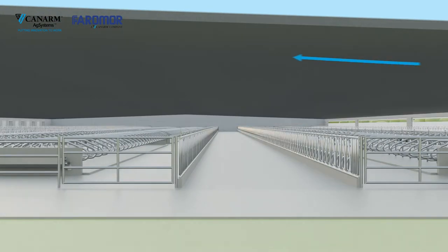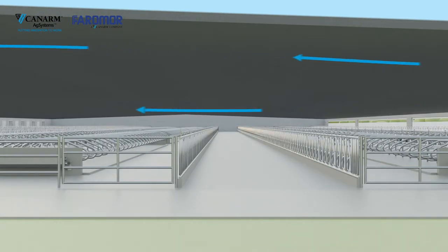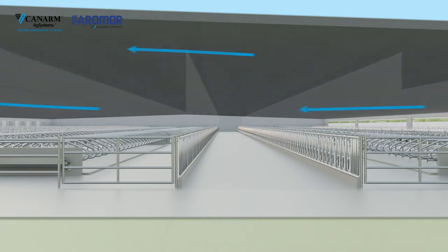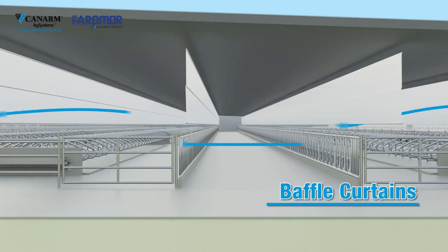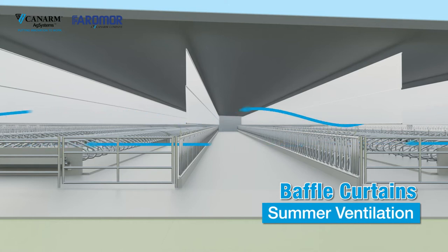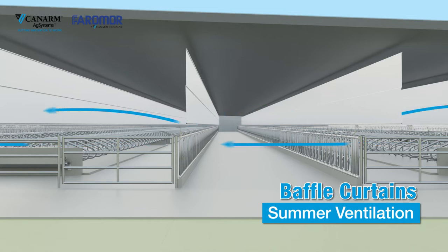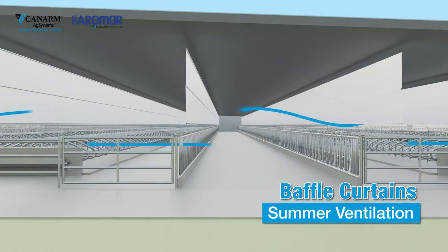Air entering the barn after leaving the curtain inlet will take the path of least resistance, which would be the unrestricted path above the cows and equipment. Baffle curtains are used to efficiently force the air downward during hot weather, directing the airstream over the cows' neck and back during lying and standing, keeping them cooler without the operational costs of additional circulation fans.